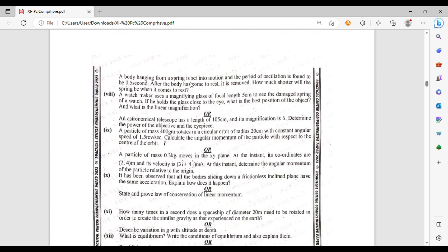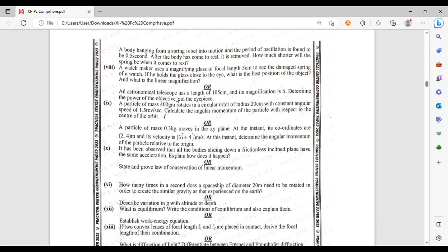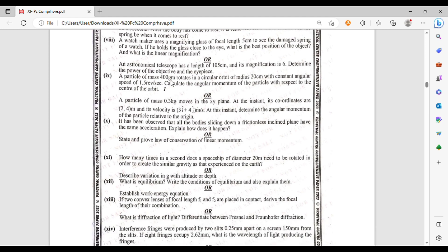Which is the numerical: a body hanging from a spring is set into motion and the period of oscillation is found to be 0.5 seconds. After the body has come to rest and is removed, how much shorter will the spring be when it comes to rest? Question number 8: a watchmaker uses a magnifying glass of focal length 5 cm to see the damage of the spring of the watch. If he holds the glass close to the eye, what is the best position of the object and what is the linear magnification? Or an astronomical telescope has a length of 105 centimeter and magnification of 6. Determine the power of the objective and the eyepiece. Question number 9: a particle of mass 400 gram rotates in a circular orbit of radius 20 centimeter with a constant angular speed of 1.5 revolutions per second. Calculate the angular momentum of the particle with respect to the center of the orbit. Or a particle of mass 0.3 kilogram moves in the xy-plane. At an instant, coordinates are 2,5 meter and velocity is 3i plus 5j meter per second. Determine the angular momentum of the particle relative to the origin.